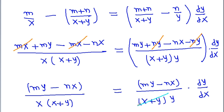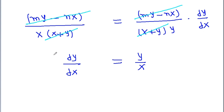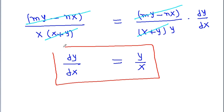Now x plus y and x plus y will get cancelled, and my minus nx and my minus nx also get cancelled, so we get dy by dx is equal to y by x. Therefore the value of dy by dx is y by x.